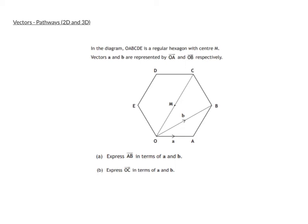So in the diagram, we have O, A, B, C, D, E - OABCDE is a regular hexagon with a centre at M, and vectors a and b are represented from O to A and O to B.